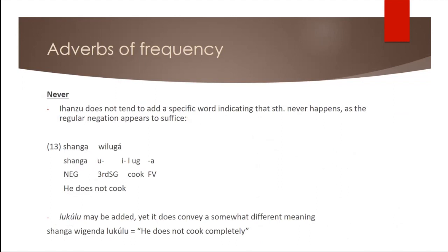So for never, it appears that having a regular negation in a sentence suffices to also express that something never happened. So shanga wi luga would translate to he does not cook literally, but it could also mean that he never cooks. So that's not really a distinction made there. One could add lukulu to that sentence. So shanga wi genda lukulu would be he doesn't walk completely, but that would again imply something slightly different, that the action is not carried out completely.